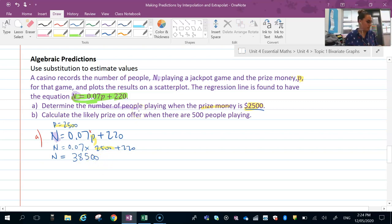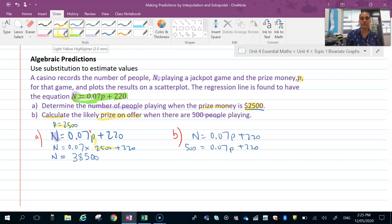So to do B, we calculate the likely prize money. That's what we're looking for when there are 500 people. That's our N, 500 people. Write your formula again: N equals 0.07P plus 220. This time it's our number of people that we have. So that's 500 equals 0.07P plus 220. Now you might be like, oh wait, I'm not too sure how to do that. There are algebraic processes involved in this. We might have to do a quick algebra video as a recap. It won't be covered in here.